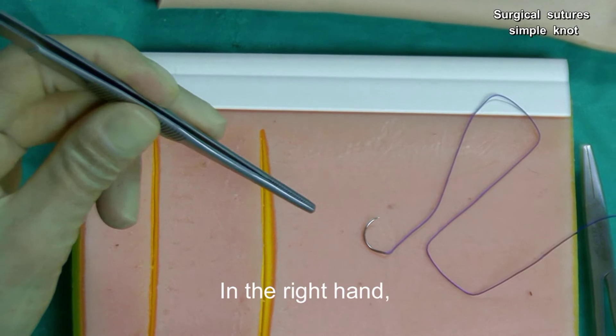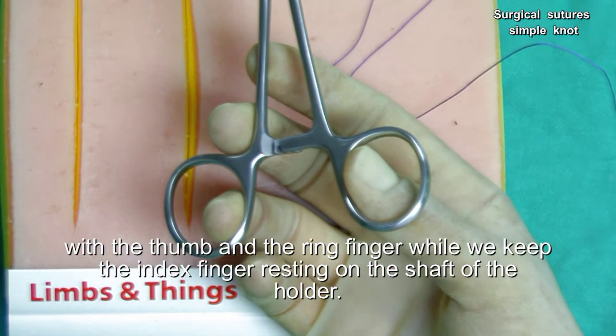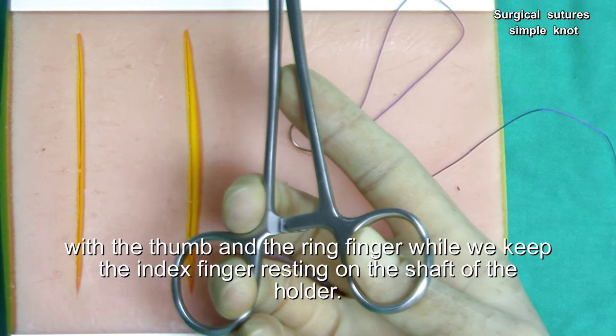In the right hand, we hold the handle of the needle holder with the thumb and the ring finger while we keep the index finger resting on the shaft of the holder.